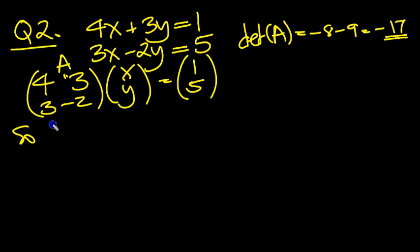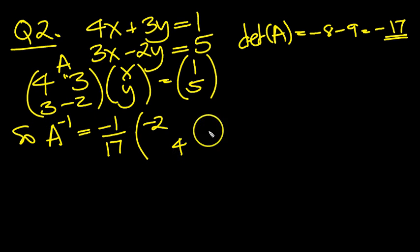So, the inverse, let's work out the inverse, is 1 over det A. So that'll be minus 1 over 17 if you put the minus at the top. Flip the leading diagonal around, and then flip the sign of the trailing diagonal entries. There we are, there's A to the minus 1.